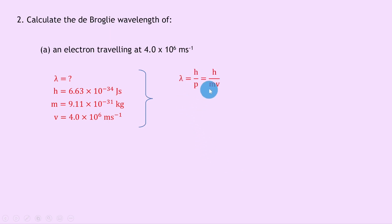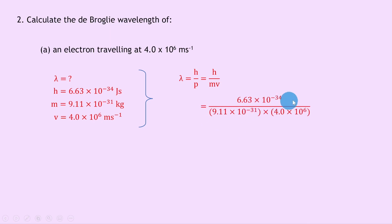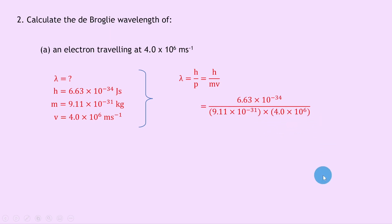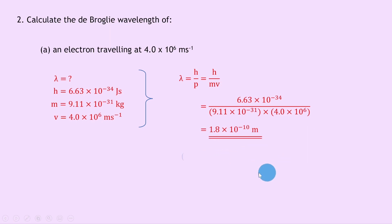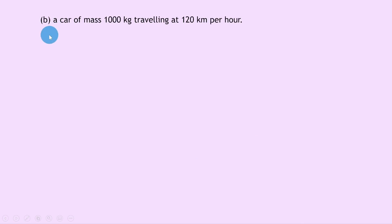Writing down our equation for de Broglie wavelength: lambda equals h over p, which I'm going to expand to h over mv because linear momentum p equals mv. Substituting in the numbers we have 6.63 times 10 to the minus 34 divided by 9.11 times 10 to the minus 31 times 4.0 times 10 to the 6, giving an answer of 1.8 times 10 to the minus 10 meters. Note that this is a typical x-ray wavelength.